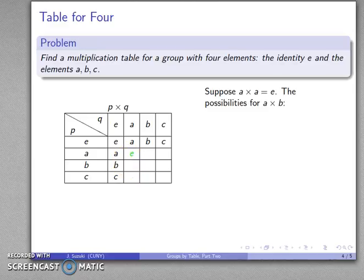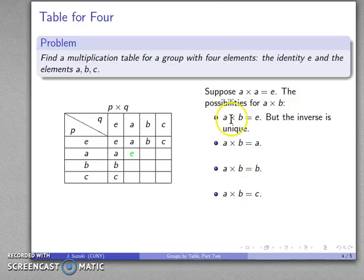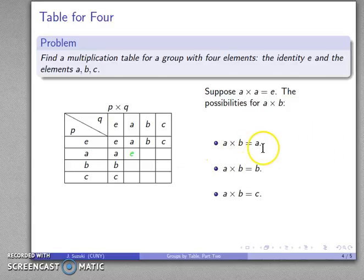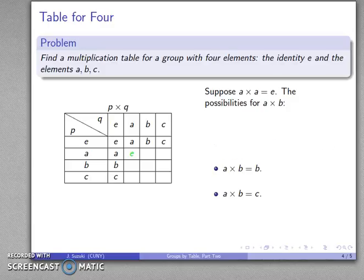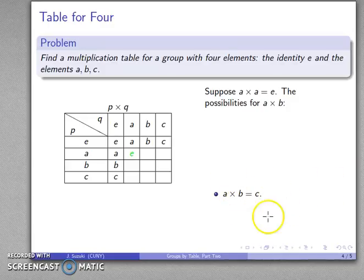Let's list the possibilities for A times B: it could be E, A, B, or C. A times B equals E would mean B is A inverse, but I already know what the inverse is — the inverse is unique, so that's not a possibility. A times B equals A would mean B looks like the identity element, but the identity is unique, so we can't have that. For the same reason, A times B equals B is not a possibility, because that would make A the identity element. So A times B has to be equal to C.